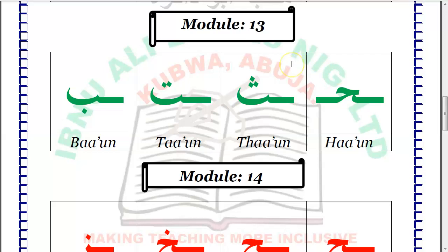You read Fa-on by placing the tip of your tongue on the edge of your front teeth. Fa-on. Fa-on. As in 'Thank you.' Thank you.